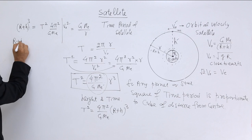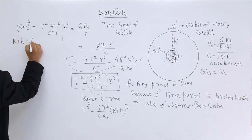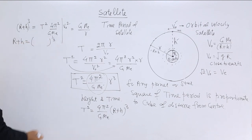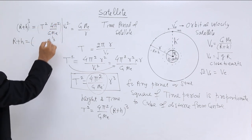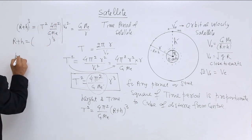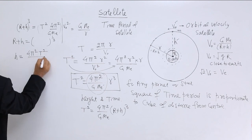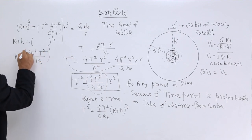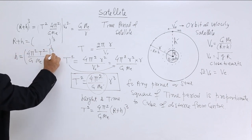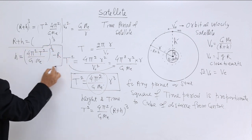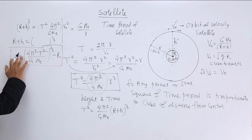Then, take cube root of both the sides, so we get r plus h is equal to this whole thing cube root, this whole thing cube root. Then h is equal to here, 4 pi square t square upon g mass of the earth to the power one third minus r. This is the relation of height and time.